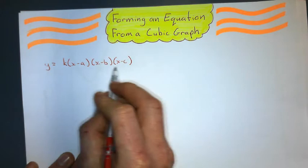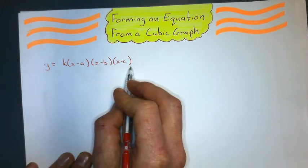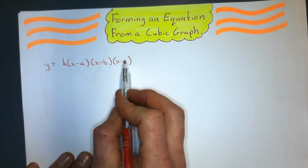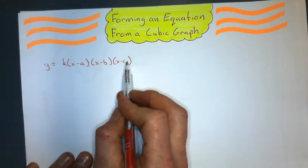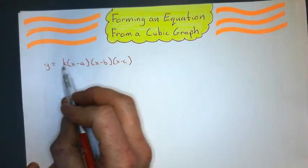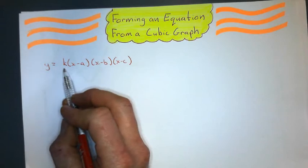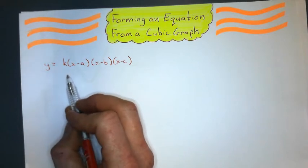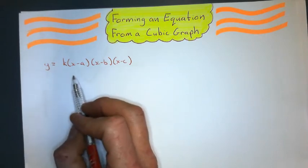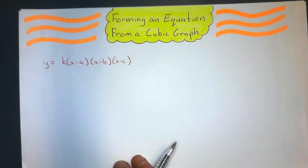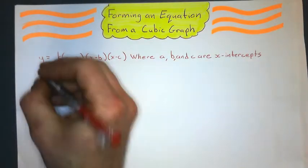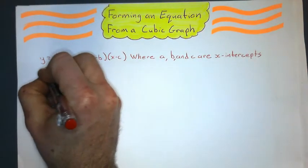One form can look like y = k(x − a)(x − b)(x − c), where a, b, and c are the x-intercepts and k is some constant number that we're going to have to solve for.